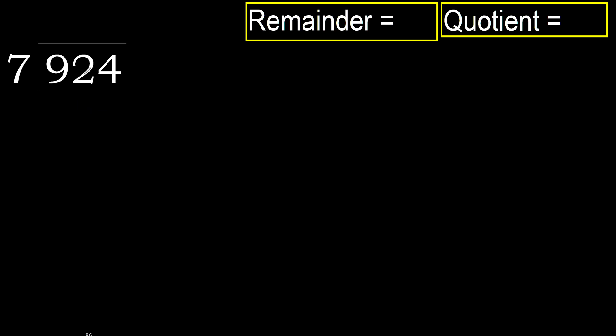924 divided by 7. 9 is not less, therefore with 9 — 7 multiplied by which number is nearest to 9 but not greater.